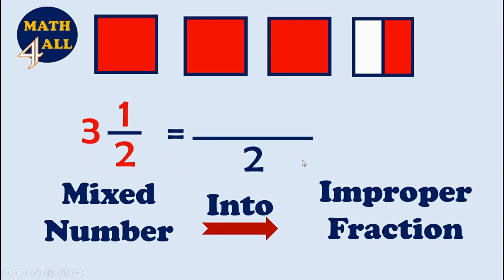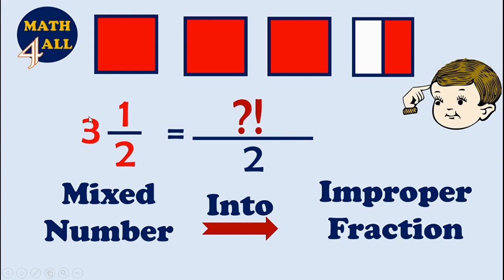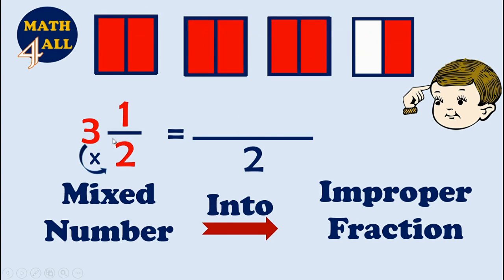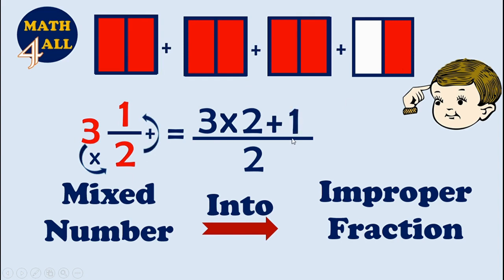Write two in the denominator. Now I need to get the numerator. First, multiply the whole number by the denominator to get the number of parts: three times two. That means you break each full colored shape into two parts. Now add all the parts: three times two, plus one part. Three times two equals six, plus one equals seven. So the answer is seven-halves — this is the improper fraction.